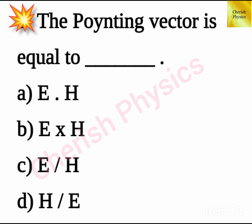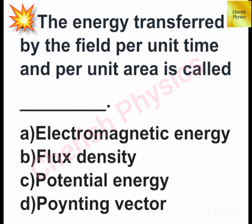The Poynting vector is equal to the energy transferred by the field per unit time and per unit area, which is called dash.